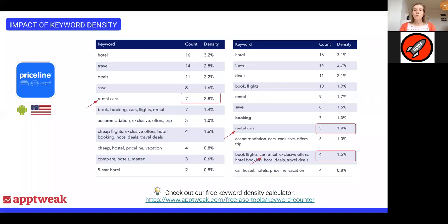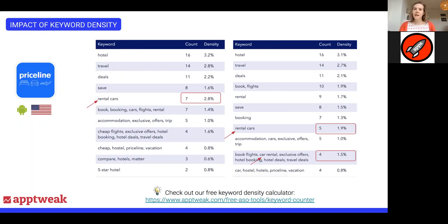The tool returns the number of times a keyword is repeated in a description and the density. Density is the number of times a keyword appears in a text divided by the total number of keywords in that text. On Google, the higher your density, the more importance you're giving to that keyword in the eyes of the algorithm. We recommend a good density between one and two percent. Three percent is really high, and above that you start getting into keyword stuffing — a density of four or five percent is too high, and Google penalizes your app for that.